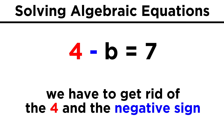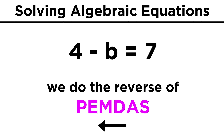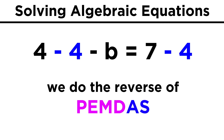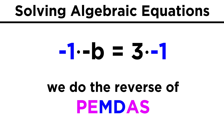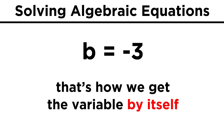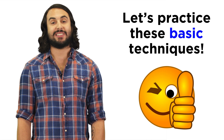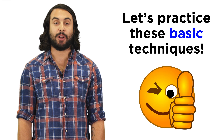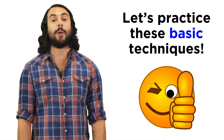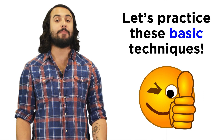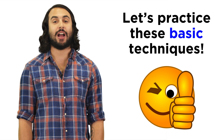With this example, we can see that if we have two steps to do, we undo operations in the reverse order of PEMDAS. We work with addition and subtraction first, and then we do multiplication or division. This is the order that is necessary to get the variable by itself. Algebraic equations can certainly get much more complicated than this, but we should master these simple ones first, so let's check comprehension.